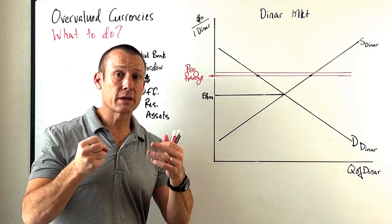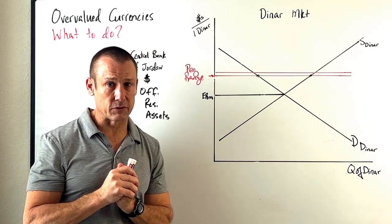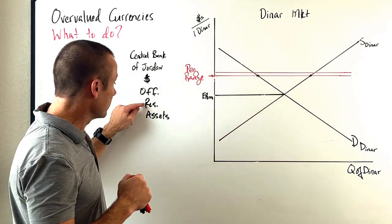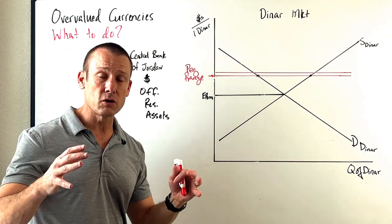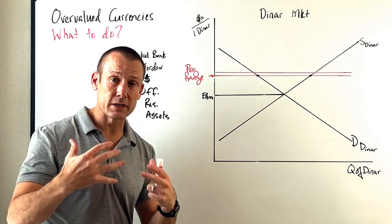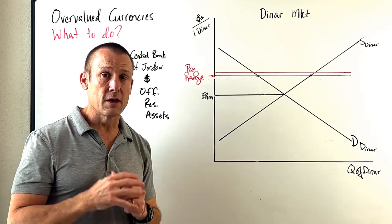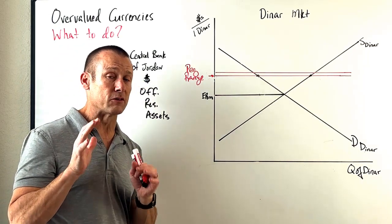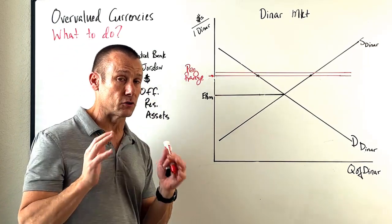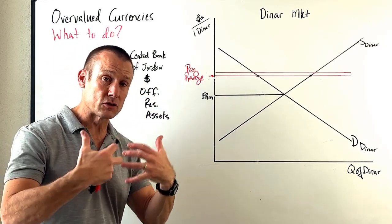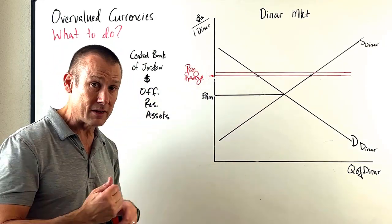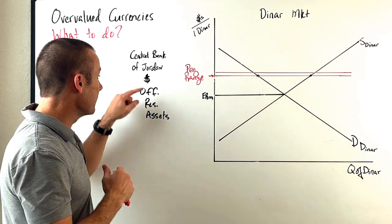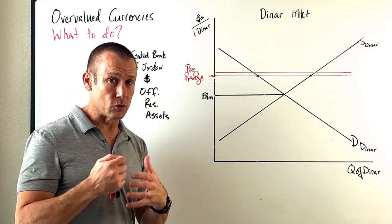What can Jordan do about that? The number one thing they can do is use their official reserve assets. Official reserve assets are currencies that countries use to settle international payments. The big two are the U.S. dollar and the euro. Since Jordan is pegging the dinar to the dollar, they're definitely going to hold dollars as their reserve asset.